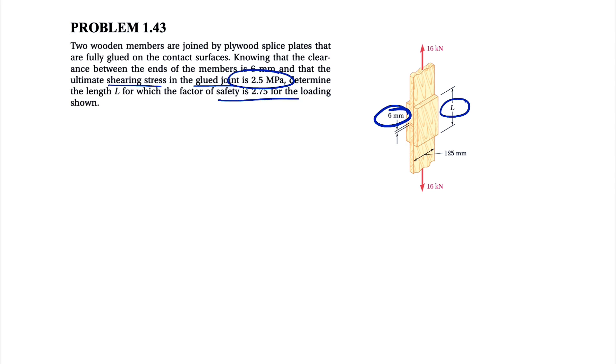We know that the ultimate shearing stress in the glued joint is 2.5 MPa, and we need to determine the length L for which the factor of safety is 2.75. So what we have is the ultimate shearing stress, 2.5 times 10 to the 6 Pa, we have the factor of safety, 2.75, and we also need to figure out the length.